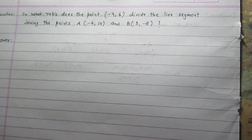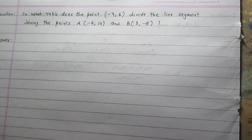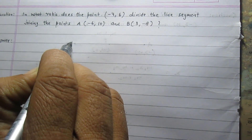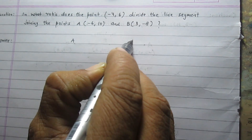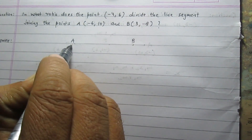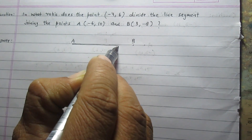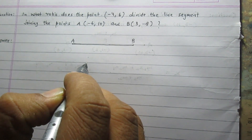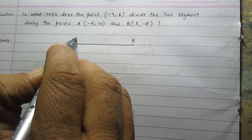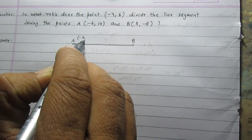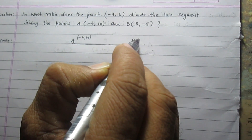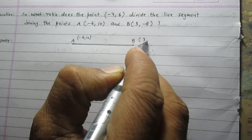In this question, we are given three points. Out of these three points, two points are the endpoints of a line segment. These points are point A and point B — the endpoints of line segment AB. The coordinates of point A are minus 6 and 10, and the coordinates of point B are 3 and minus 8.